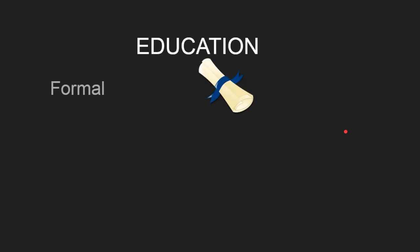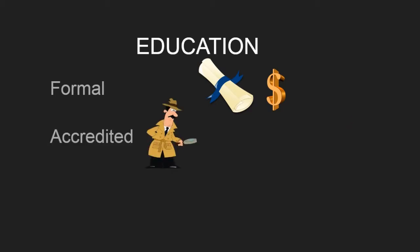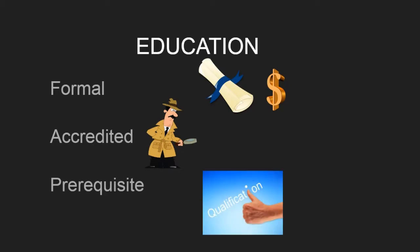So, education — what is education? Education is usually formal and has some kind of certification, degree, or credential, and it usually requires you to spend large amounts of money. For example, if you've taken the CISSP training course, it usually costs several thousand dollars. The education is accredited, meaning it follows some kind of standard, and it can be a prerequisite to jobs — you see listings requiring CISSP, CISM, a bachelor's in IT security, or MIS.